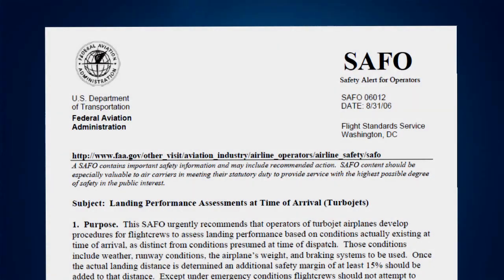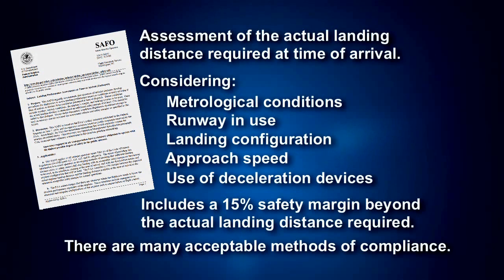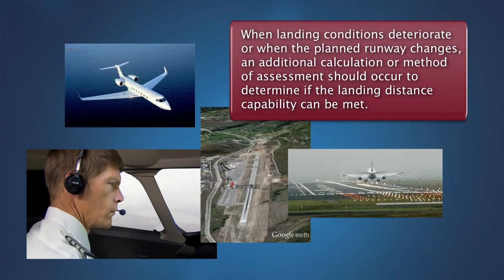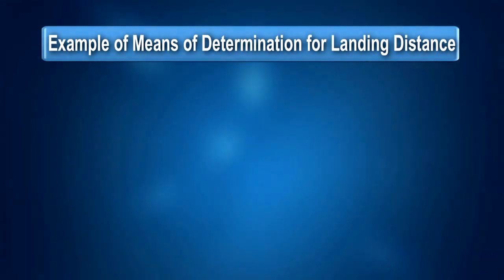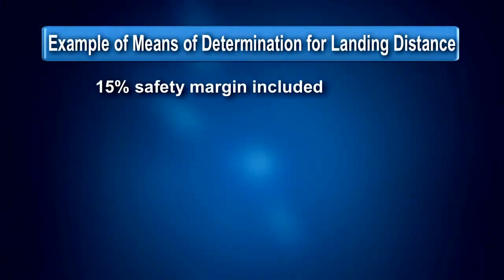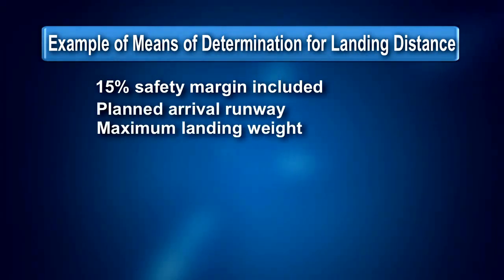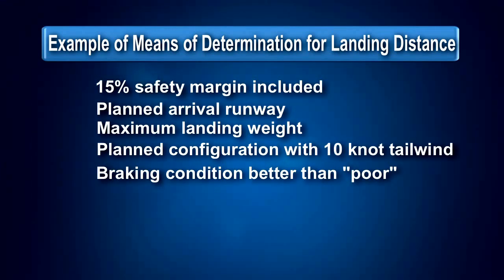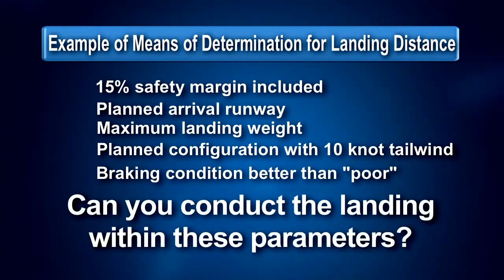FAA SAFO 06012 recommends that all turbojet operators have procedures to ensure that a full-stop landing with at least a 15% safety margin beyond the actual landing distance can be made on the runway to be used, in the conditions existing at the time of arrival, and with the deceleration means and airplane configuration that will be used. While this assessment does not mean that a specific calculation must be made before every landing, when conditions deteriorate or the landing runway changes from the planned runway, a calculation or other method of determining the actual landing distance capability should be accomplished. One example would be determining before the flight that you can land with at least a 15% safety margin on the planned arrival runway, at maximum landing weight, in the planned landing configuration with 10 knots of tailwind, in any runway braking condition better than poor — then verifying at time of landing that conditions fall within those parameters.